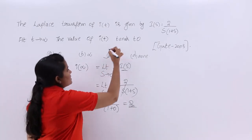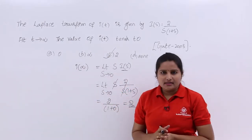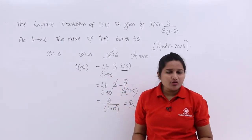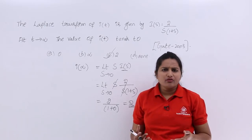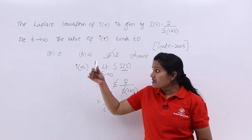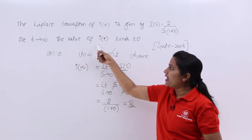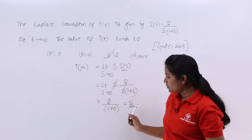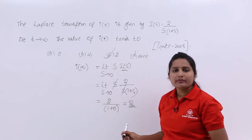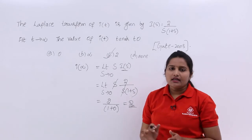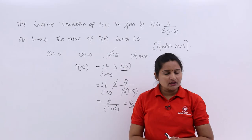The correct option for this problem is C, which is 2. Sometimes they will not ask directly for the final value of I(t). Instead, they may phrase it as: what is the value at t tending to infinity? The value of I(t) tends to 2. This means the final value is 2. We need to identify the correct answers for final value and initial value theorem problems in this way.